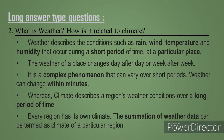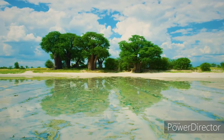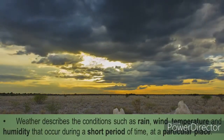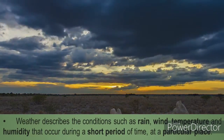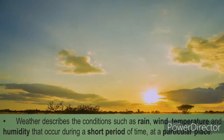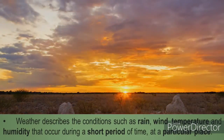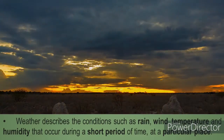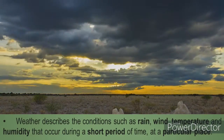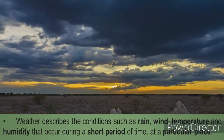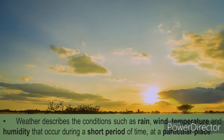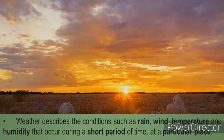Now let us go to the second question: what is weather and how is it related to climate? Weather describes the conditions such as rain, wind, temperature, and humidity that occur during a short period of time at a particular place. Weather is based on rain, wind, temperature, and humidity, and it applies only for a short time at a particular place.